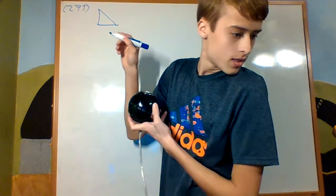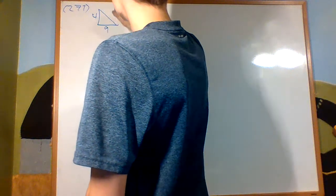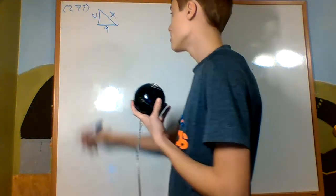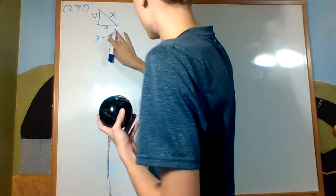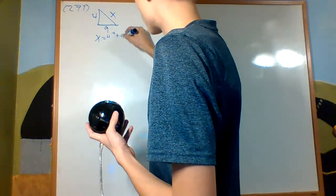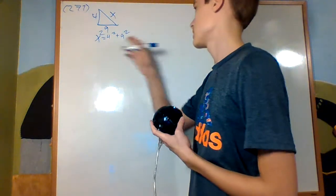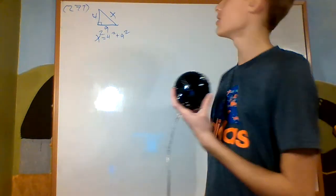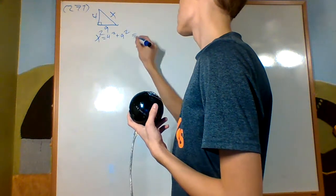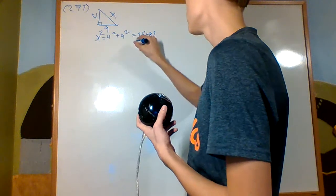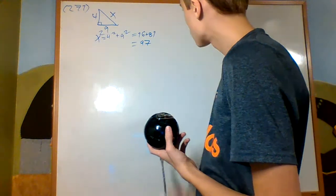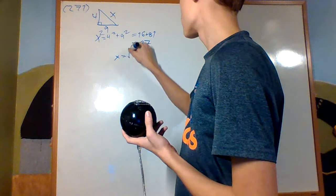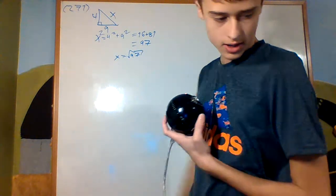We have a right angle triangle that is 4 by 9 by X, and I want to figure out what X is. By the Pythagorean theorem, X squared equals 4 squared plus 9 squared, which is 16 plus 81, equaling 97. So X is the square root of 97 — not a clean answer, but it's the right answer.